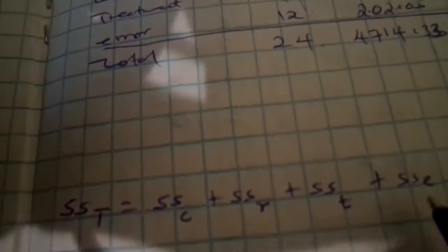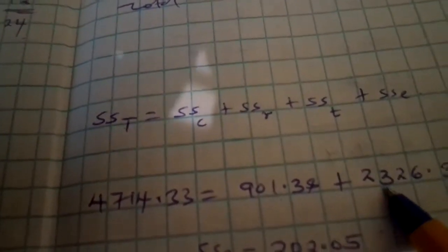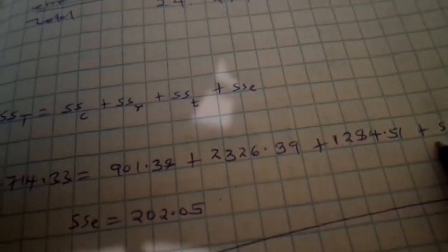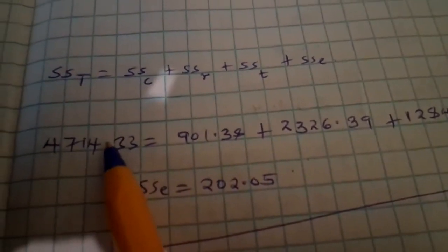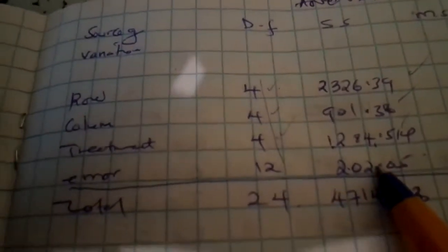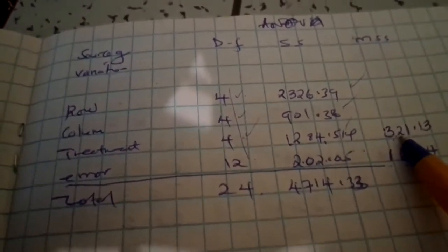We did not directly calculate the error sum of squares. We use the identity: total sum of squares equals column sum of squares plus row sum of squares plus treatment sum of squares plus error sum of squares. Since we have all the other values, we subtract them from the total sum of squares to get the error sum of squares. Since we are interested in treatment, we find the mean sum of squares for treatment.